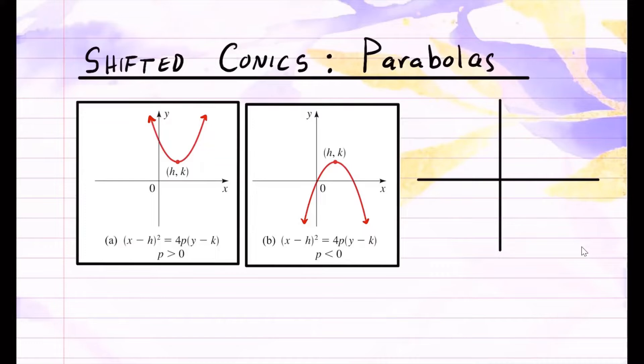For instance, if you had a parabola where the vertex is at the origin, so this is 0, 0, now we're looking at parabolas that are shifted, for example, right here.